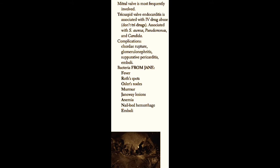The complications of valvular endocarditis include chordae rupture with acute valvular regurgitation, glomerulonephritis from multiple embolic phenomena to the glomerular capillaries, suppurative pericarditis with extension of the infection into the pericardial space, and other types of embolic phenomena. These patients may also develop valve ring abscesses that may cause interruption of electrical signaling through the heart, especially at the atrioventricular node.